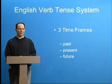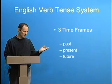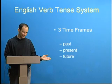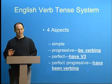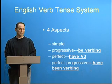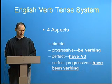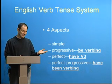With that math, we start with the number 3 — that would be 3 time frames. The time frames are past, present, and future. The next number we had was 4. When we think of 4, we think of the aspects: perfect, simple, and progressive.